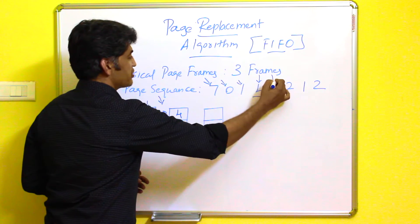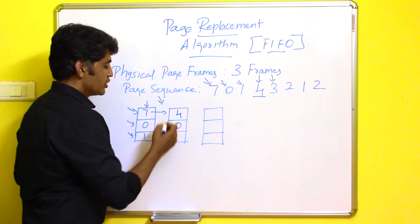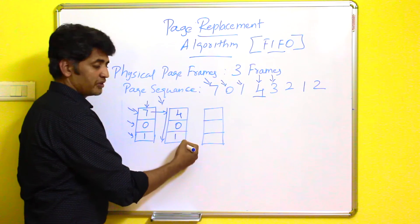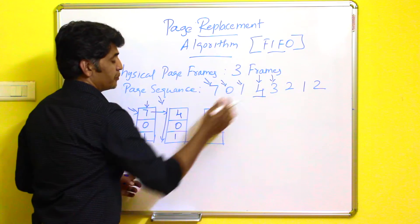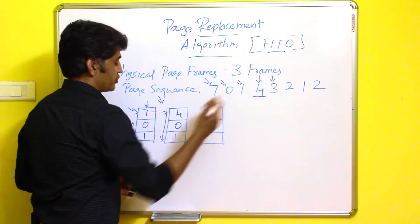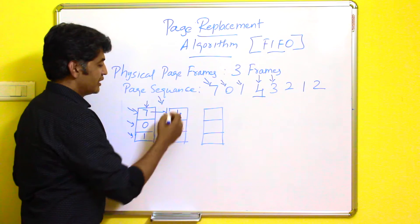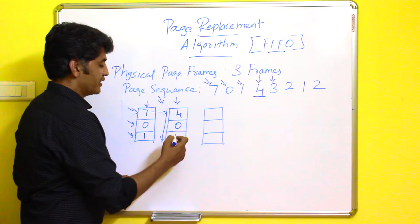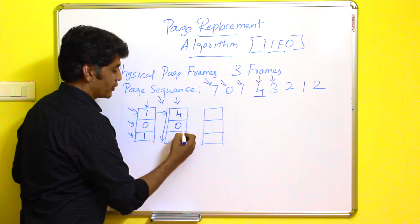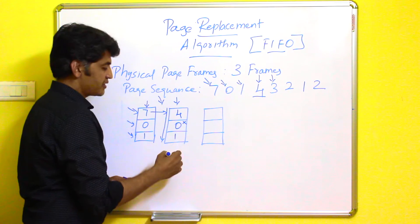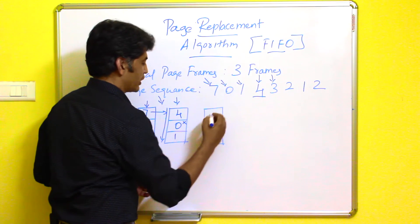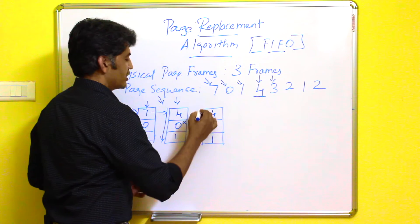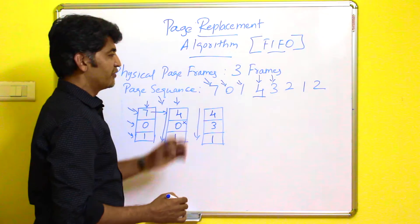After that, the next required page is page number three. The operating system will verify all frames against page three. Page number three is not there, so again a page fault will occur. It will identify which page came first — zero came first compared to the others, so zero will be replaced by three. Now the frames hold four, three, and one. This completes another First In First Out replacement.